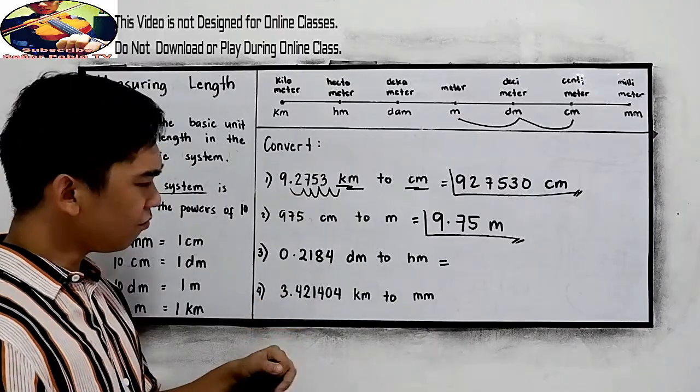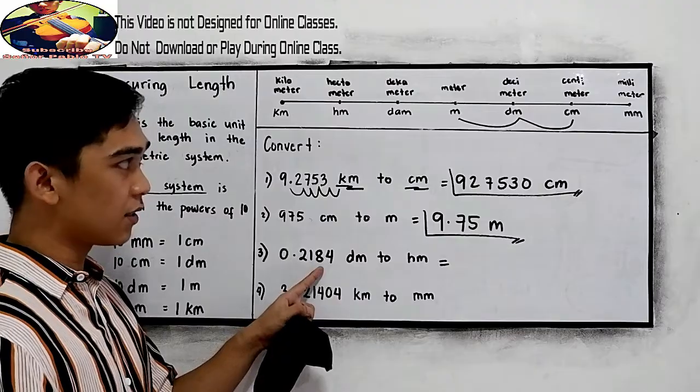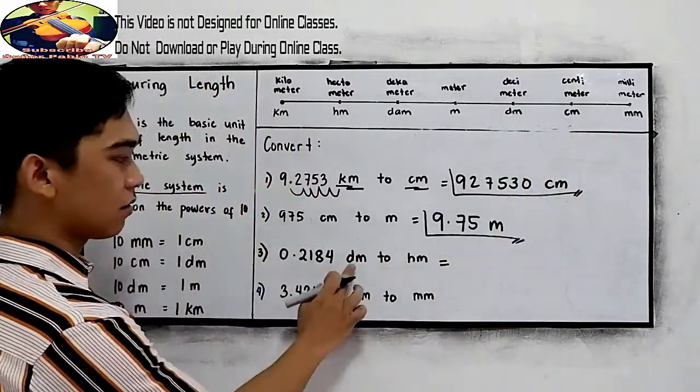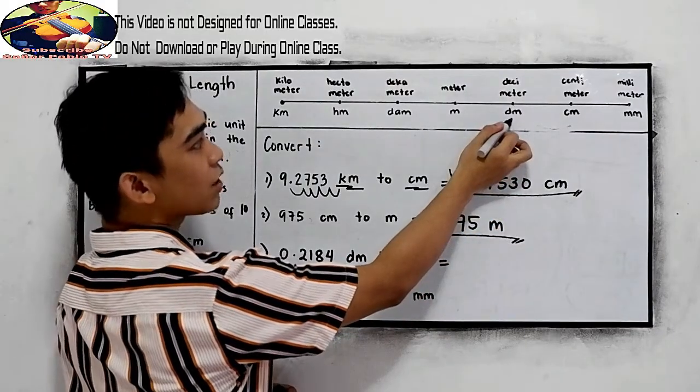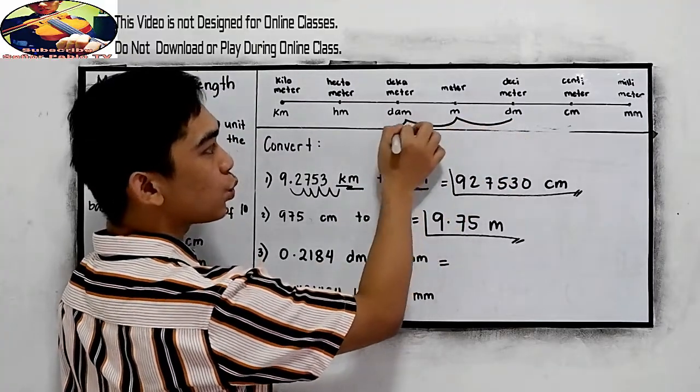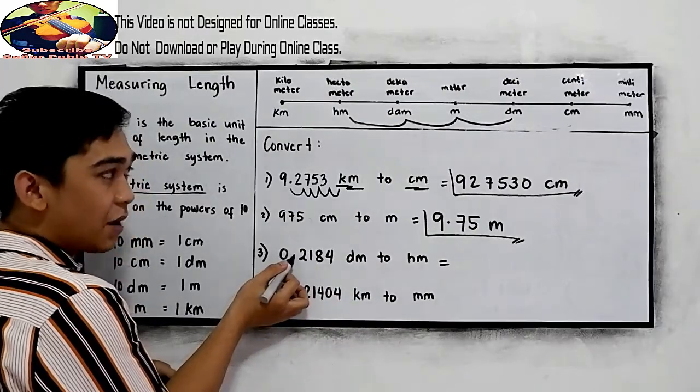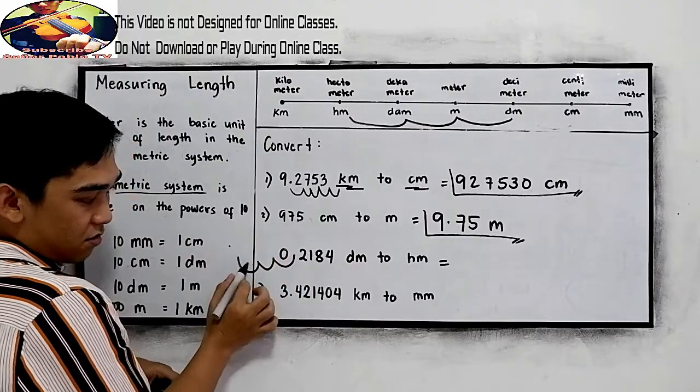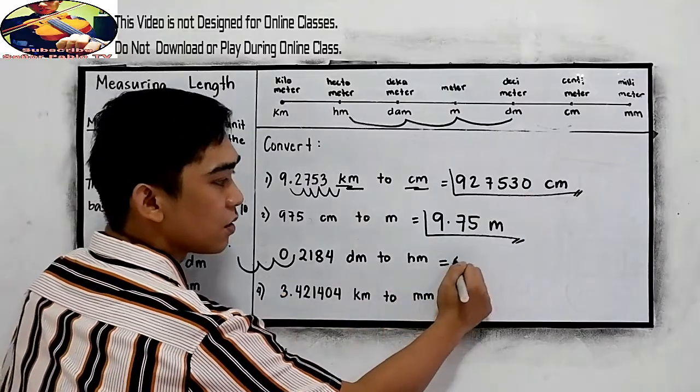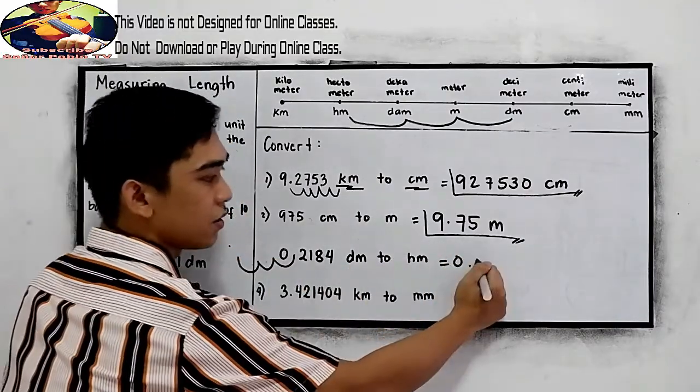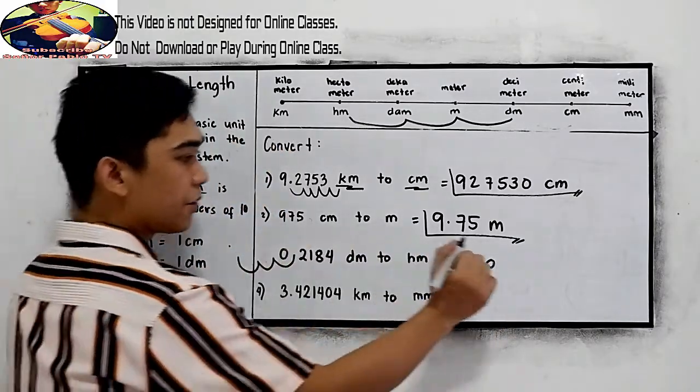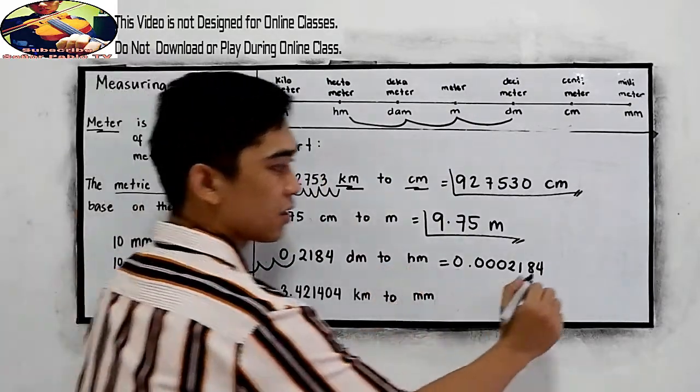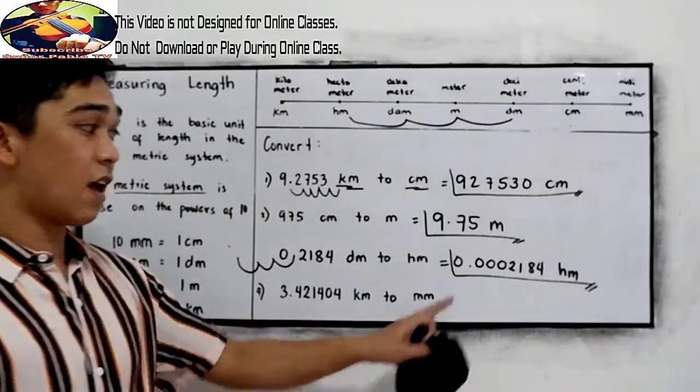Now, number 3: 0.2184 decimeter to hectometer. In our table, locate the decimeter going to hectometer. That's 1, 2, 3. From the decimal point, move 3 times to the left. We have excess of 2 here, so we will write zeros on that. So we have zero point zero zero zero 2184. Our desired unit is hectometer. That will be our answer.